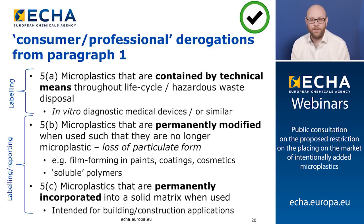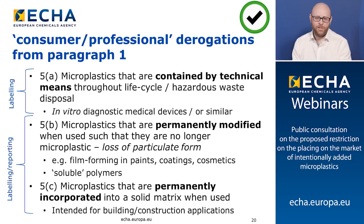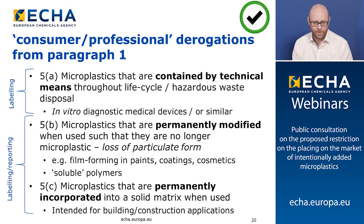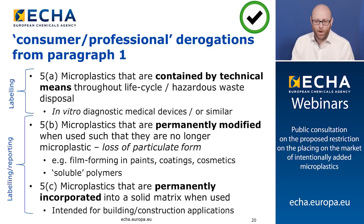There is a further set of derogations that can be considered consumer/professional-use type derogations — not for uses occurring on industrial sites. Derogation 5a covers uses of microplastics contained by technical means throughout their lifecycle where any microplastic-containing wastes are disposed of as hazardous waste. This is intended for uses such as in vitro diagnostic medical devices, laboratory-scale purification of water, or ion exchange processes happening in a professional context.